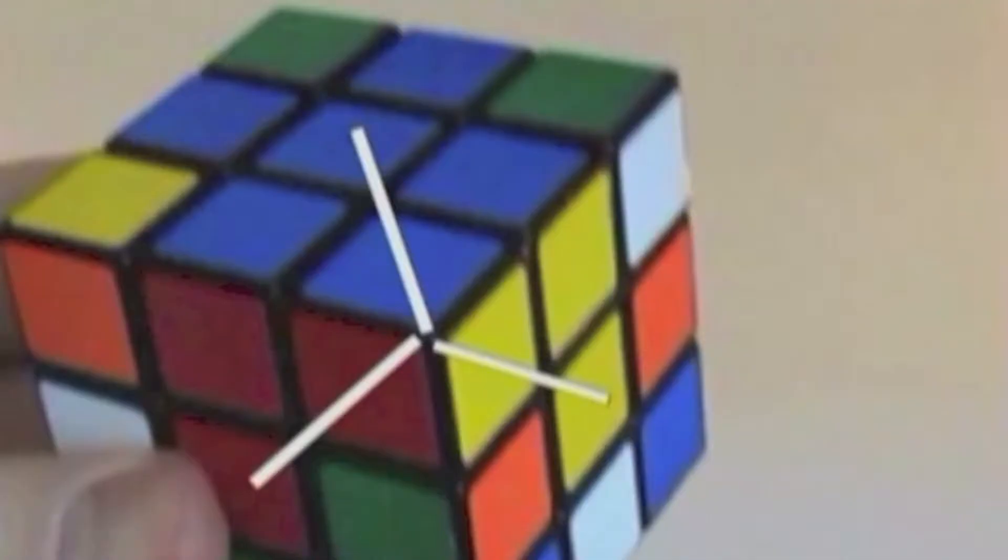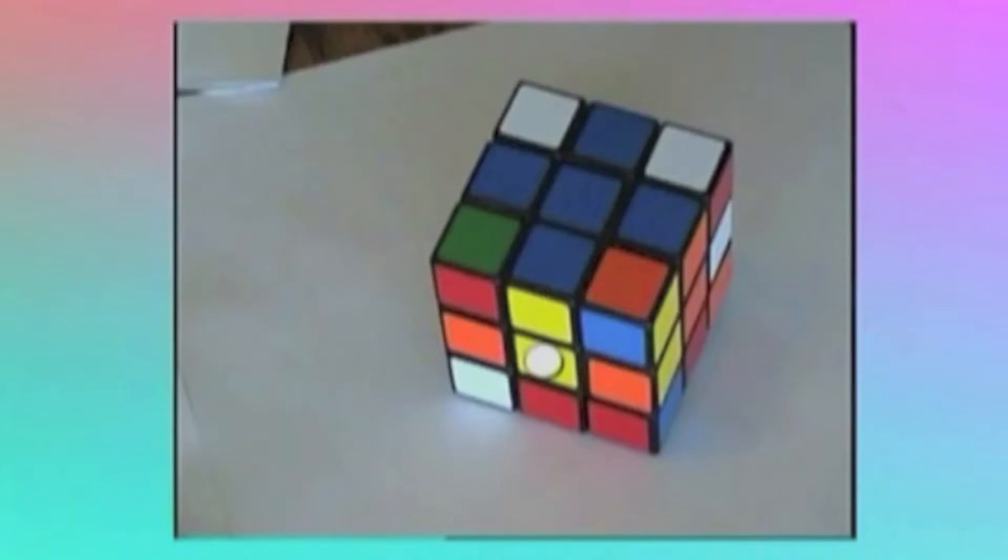Your goal is to get each of the corner colors to line up with the same color center square. Sometimes this is already done for you, so just check for that. We have the center color yellow facing us, to the right is orange, and on top we have blue.